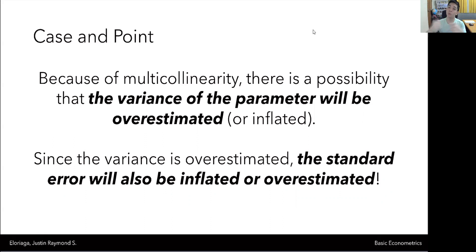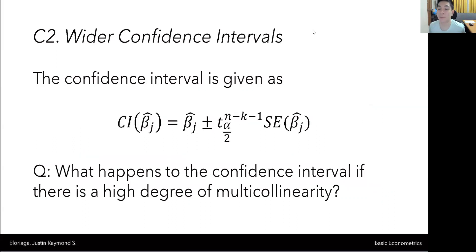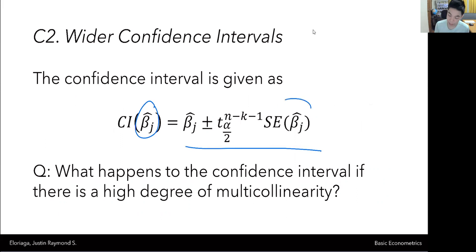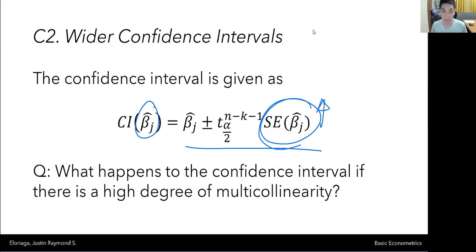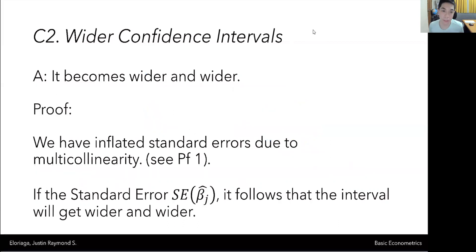That leads into the second consequence: because the standard error appears in many places inside a regression, the confidence intervals tend to be wider. The confidence interval for an estimator beta-j is computed using this formula, and note that the standard error is present in it. Since from the first consequence we know the standard error is inflated, the confidence interval gets wider and wider — the distance between the negative and positive ends increases.